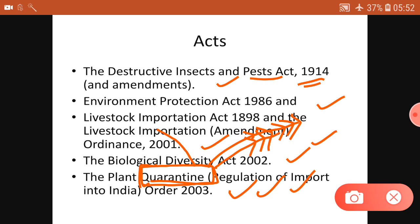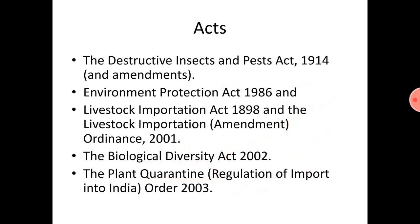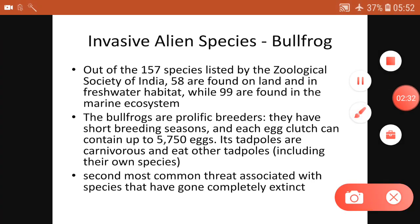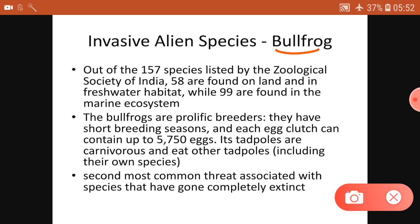The Plant Quarantine Regulation of Import into India has restrictions under that Order 2003. Out of 157 species listed by the Geological Society, 58 invasive species are found in land and freshwater habitats, and 99 are in marine ecosystems. So most invasive species are in marine ecosystems.